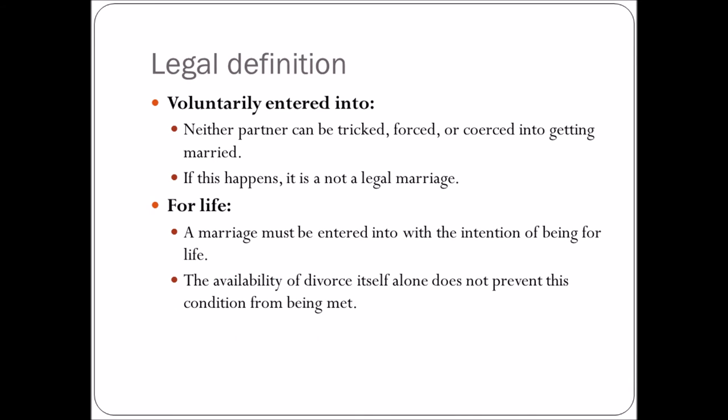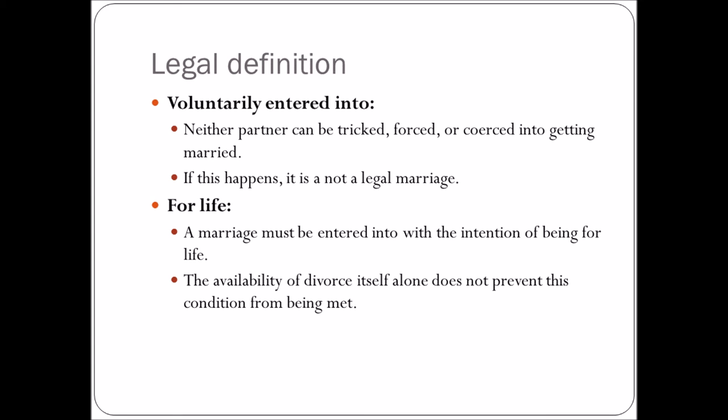Next: voluntarily entered into and for life. Neither partner can be tricked, forced, or coerced into getting married — if this happens, it's not a legal marriage. This can also arise if one of the partners is too young. And a marriage must be entered into with the intention of it being for life, though the availability of divorce alone does not prevent this condition from being met.